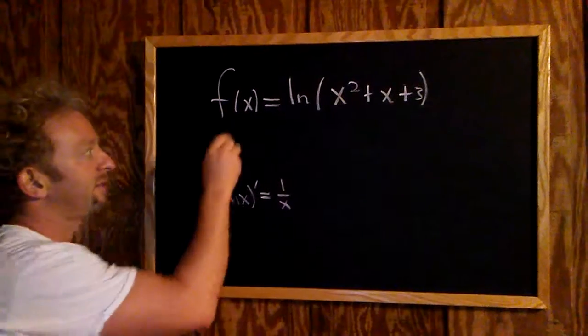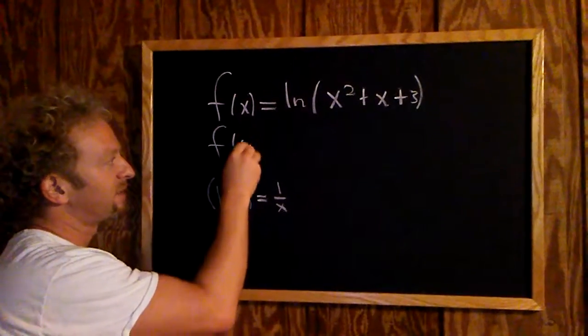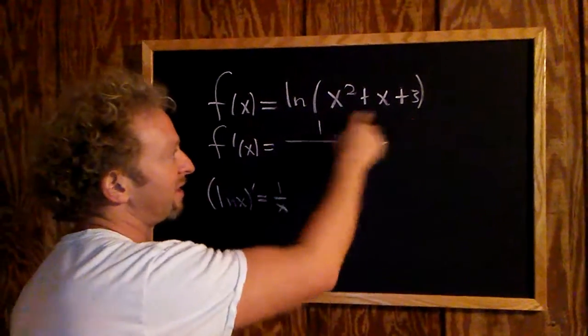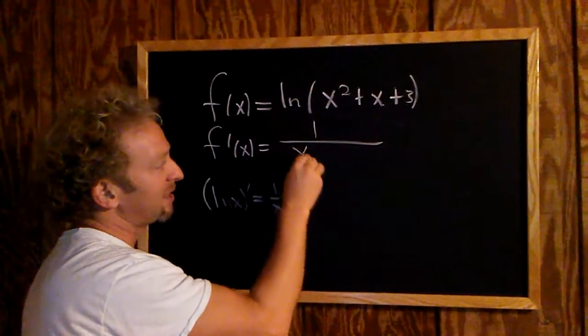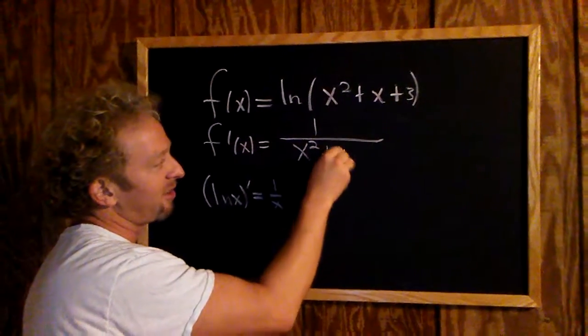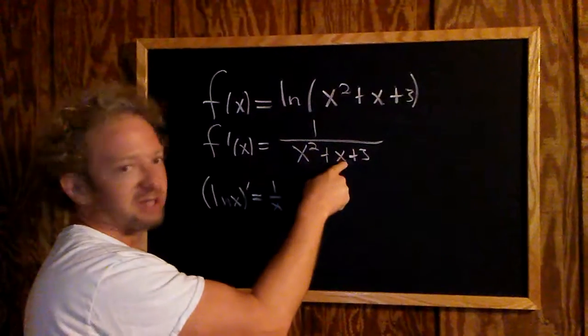So here when we take this derivative, it's f prime of x, and it's just 1 over whatever you see here. So this thing, right? But the thing is, it's not just x. It's all of this stuff: x squared plus x plus 3.